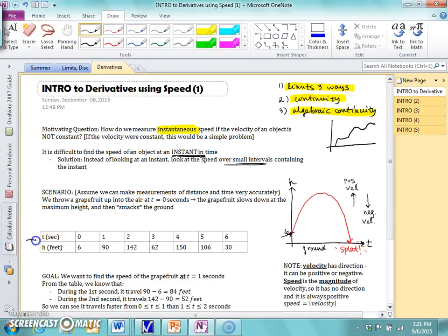Here's a table of values. Keep in mind, this is the time, and this is the height. So this table doesn't give us speed or velocity. It gives us time and height.